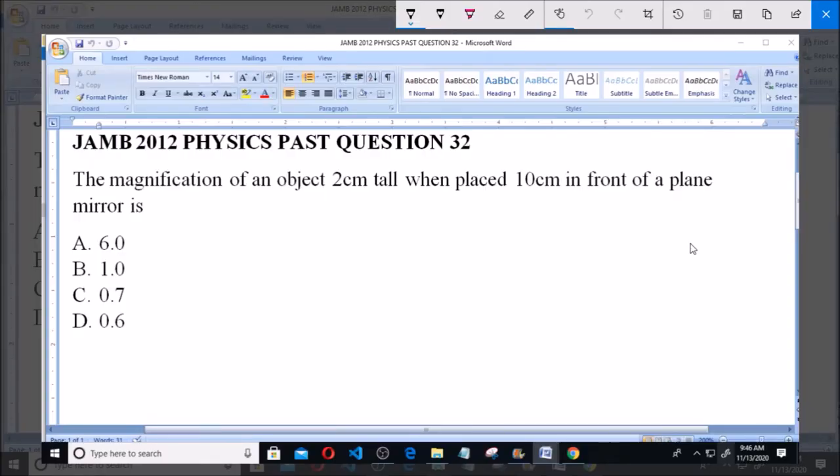Hello and welcome. I will be answering JAMB 2012 Physics Past Question 32. The magnification of an object 2cm tall when placed 10cm in front of a plane mirror is: